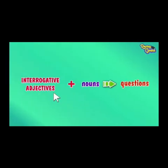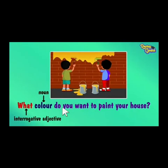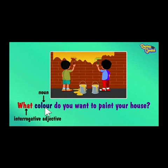Next are interrogative adjectives. Interrogative adjectives are placed before nouns in questions. For example: 'What color do you want to paint your house?' Here 'what' is the interrogative adjective, and it is always used before a noun.